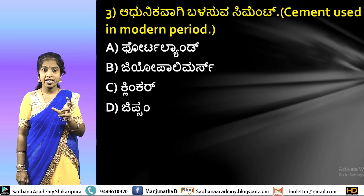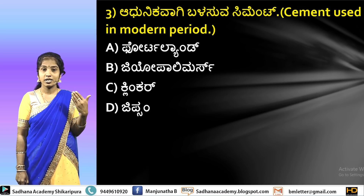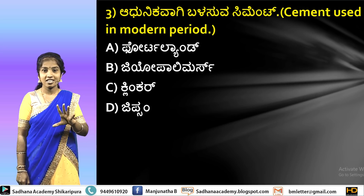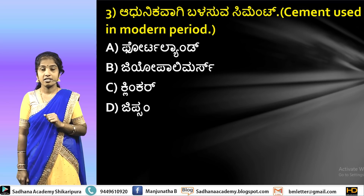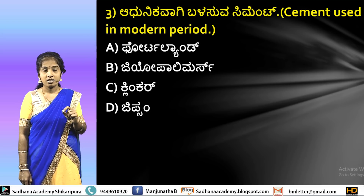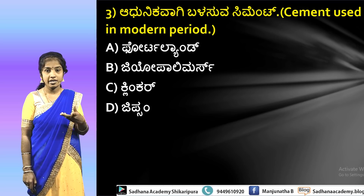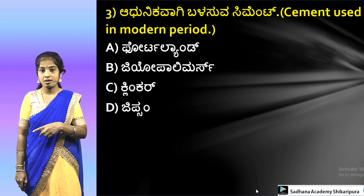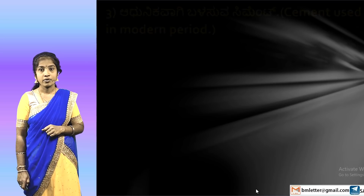Now we have to discuss cement. The cement manufacturing process involves clinkers. The next one is gypsum. Gypsum is used in the cement manufacturing process. It is also used to control the setting time and reaction during cement production. So the next answer is Portland cement.